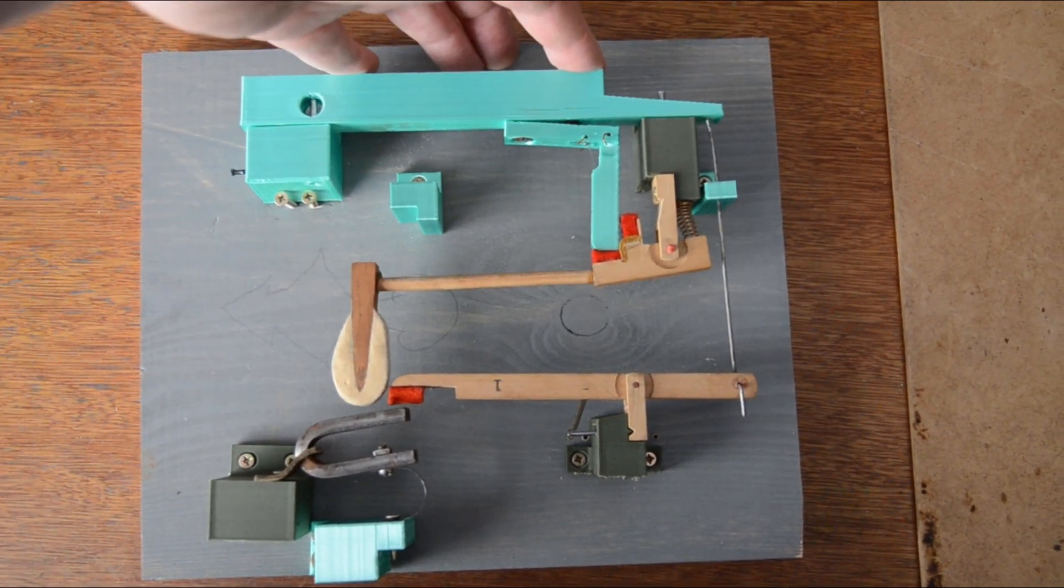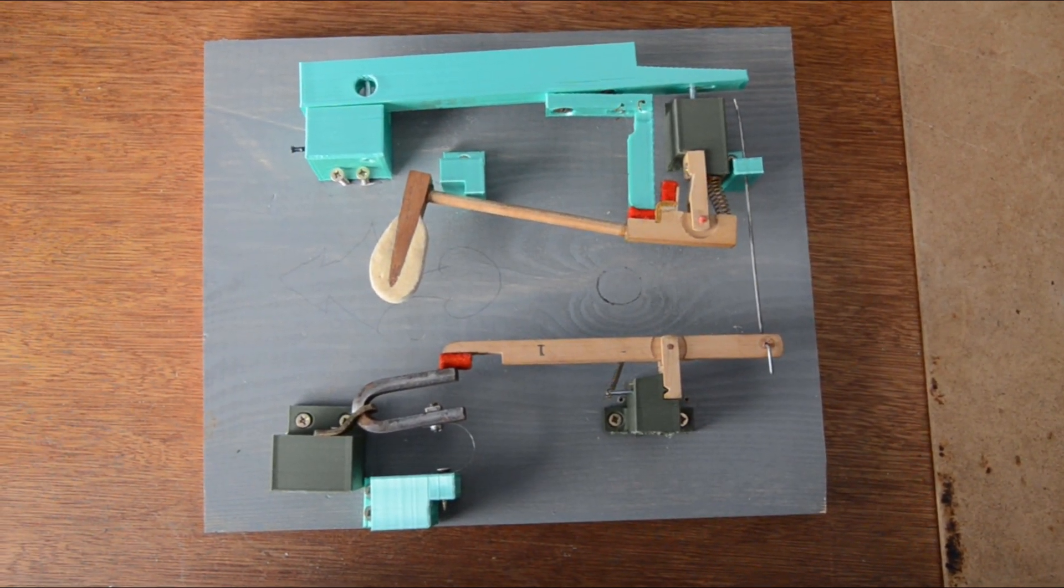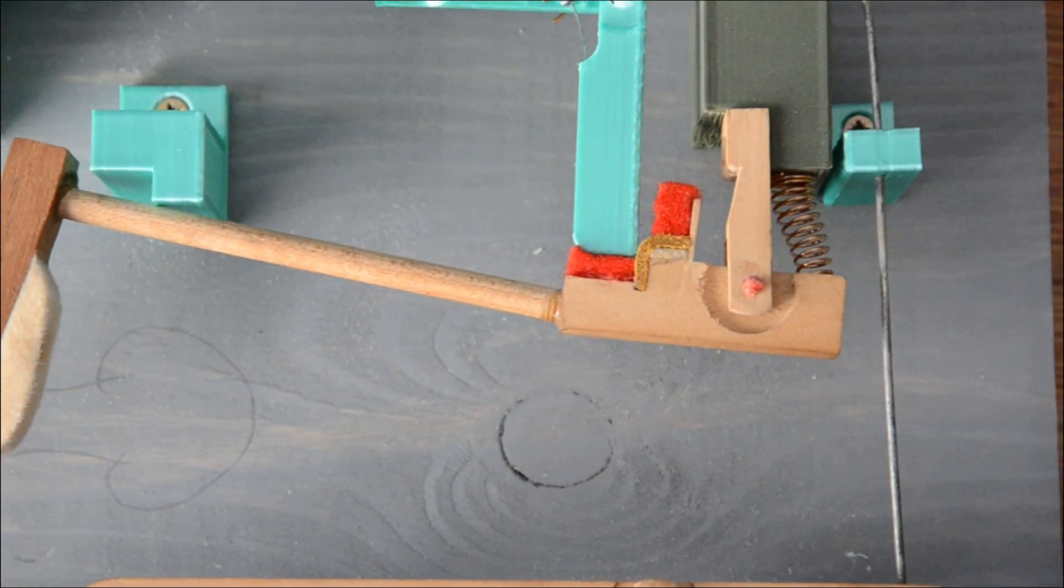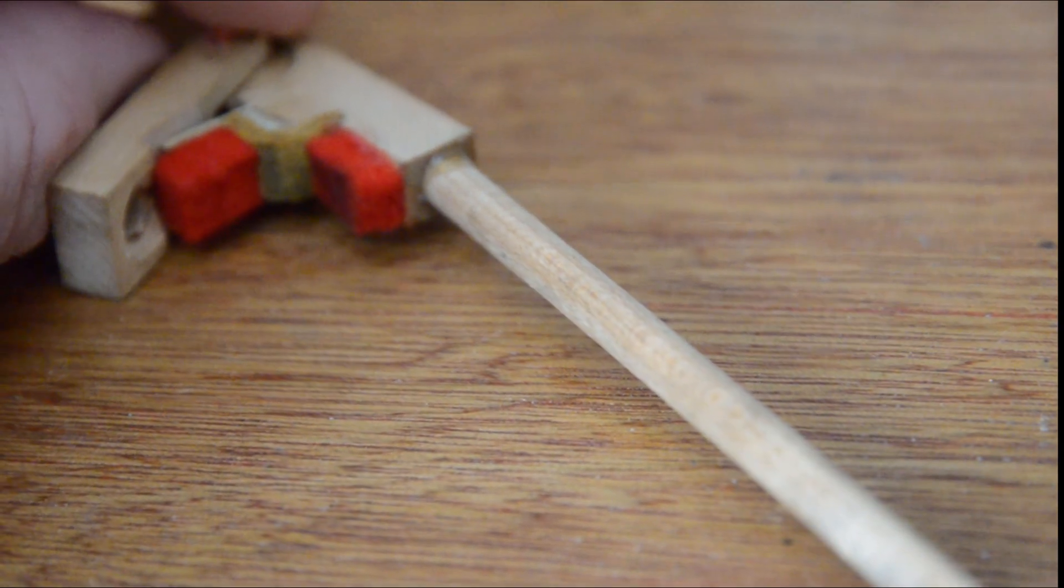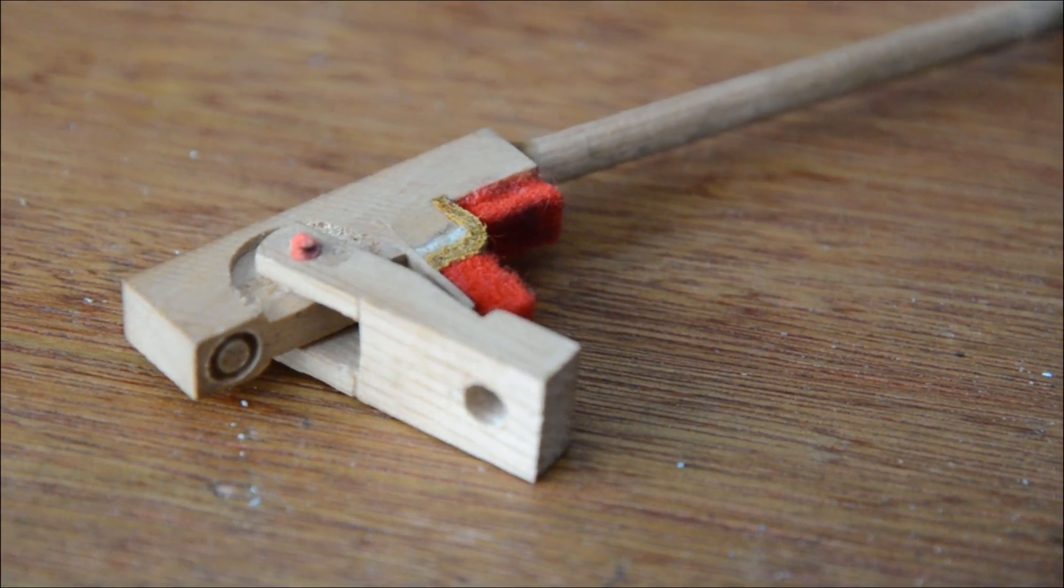Next we're going to look at the hammer. Currently the design features many parts glued together and I think we can improve this because it doesn't really add any value to us. When they made this it allowed them to change the geometry and it was easier to manufacture. But since we're going to 3D print this, we can just do it as one part and have no interfaces.